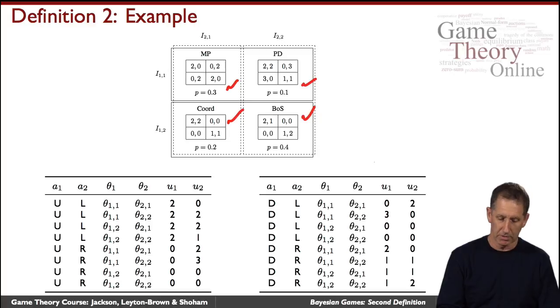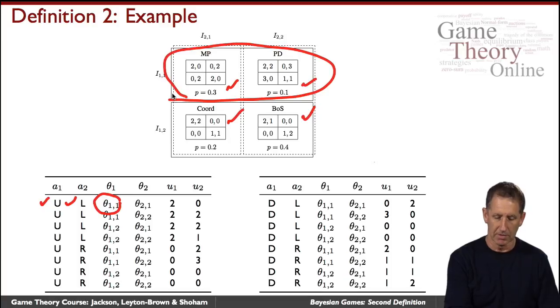So let's look, for example, what happened here. So what is the payoff when the agent, the row agent plays up and the column player plays left? Well, that depends. If the type of the agents is this one, well, what is the type? The type corresponds now to this information that they have. And the type of the second player is this.